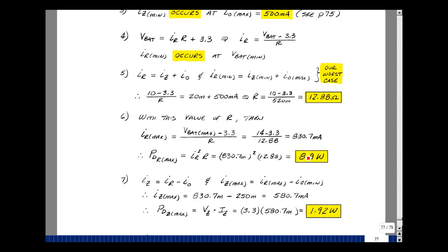Now what about the current in the Zener diode? What's the maximum value it's going to take on? Well, the Zener diode current is the resistor current minus the output current. The maximum Zener current occurs when I have the maximum current in the resistor and the minimum in the load. That's going to be the 830.7 milliamps minus the 250, or 580.7 milliamps.